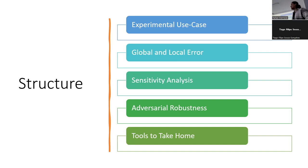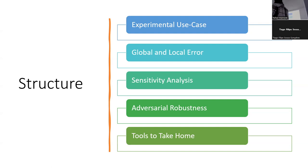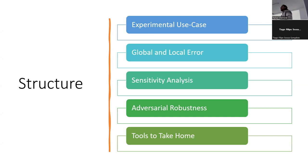I'm going to start by going through the structure of this presentation. It will start with a story — the story of the experimental use case — where I'll try to tell you the motivation of why this work was done. Then we're going to cover each part that I performed: global and local quantification of the error, sensitivity analysis, and adversarial robustness. This last part is where I try to give you some tools you can actually bring home. So let's start with the story.